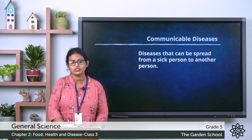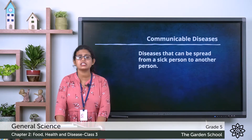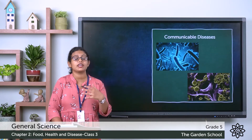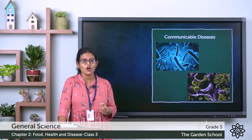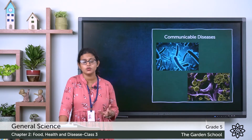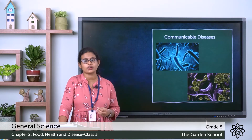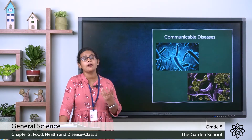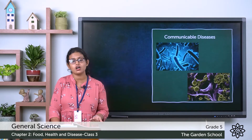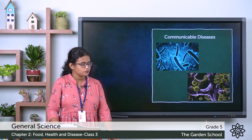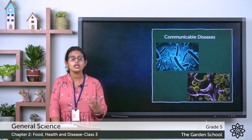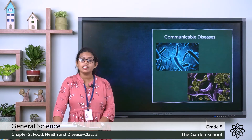Examples of communicable diseases include typhoid, malaria, and cholera. What causes communicable diseases? They are caused by microorganisms — tiny living things such as bacteria, fungi, and viruses. Disease-causing microorganisms are called germs or pathogens. Now let's discuss the different communicable or infectious diseases and see how they are caused.